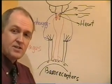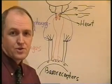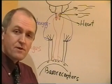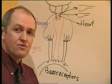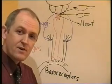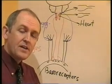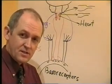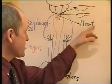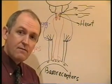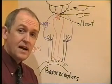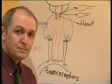Peripherally vasoconstrict arterioles and veins. You'll get an arterial vasoconstriction and a venous vasoconstriction. You'll also get increased cardiac output via the mechanisms of increased heart rate and increased stroke volume.